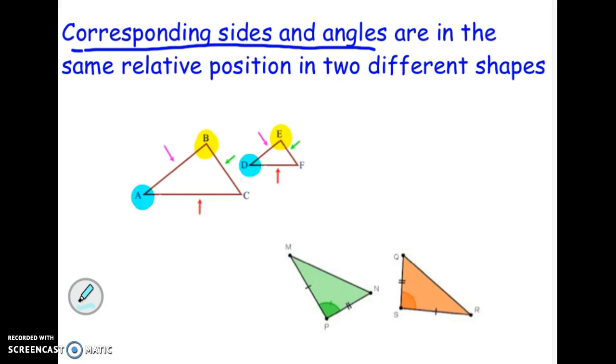Angle A and angle D, they're in the same relative position. They're corresponding, and notice they're also equal. That has to be true. C and F, those are corresponding. That one's easy because they're rotated the same way.